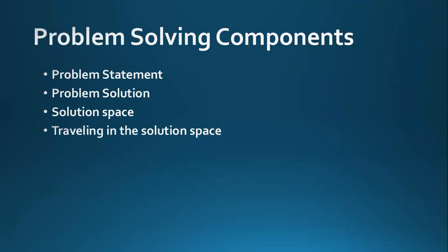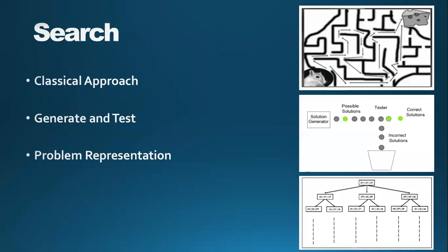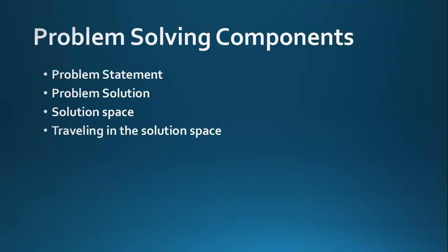Traveling in the solution space means starting from the initial state and reaching the goal state. We have to travel inside this solution space to find a solution to our problem. Traveling inside the solution space requires operators. In the mouse example, operators are actions like turn left, turn right, and go straight, which help us travel inside the solution space. The sequence of these operators is the solution to our problem.